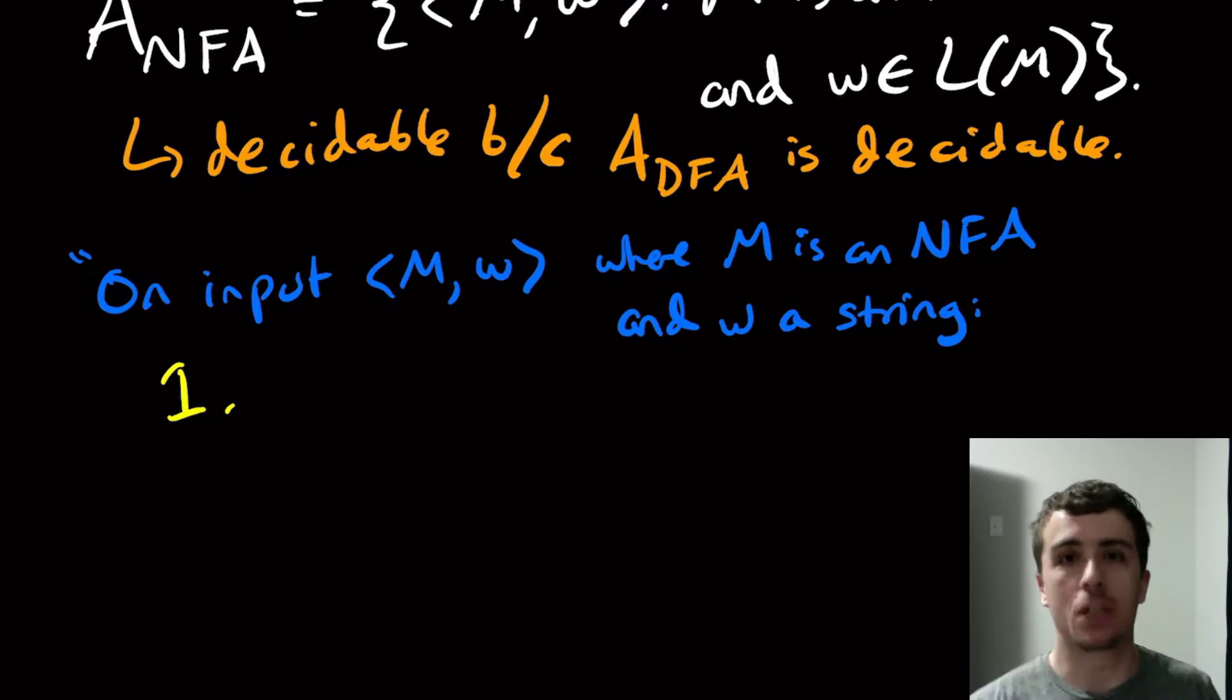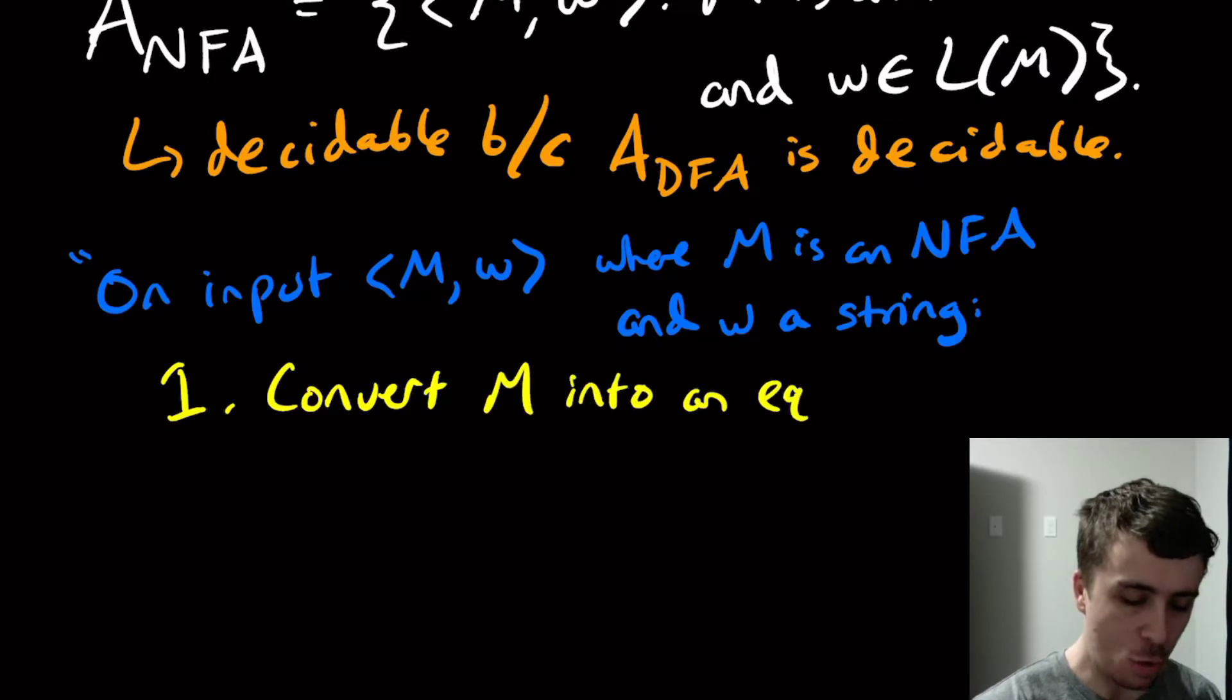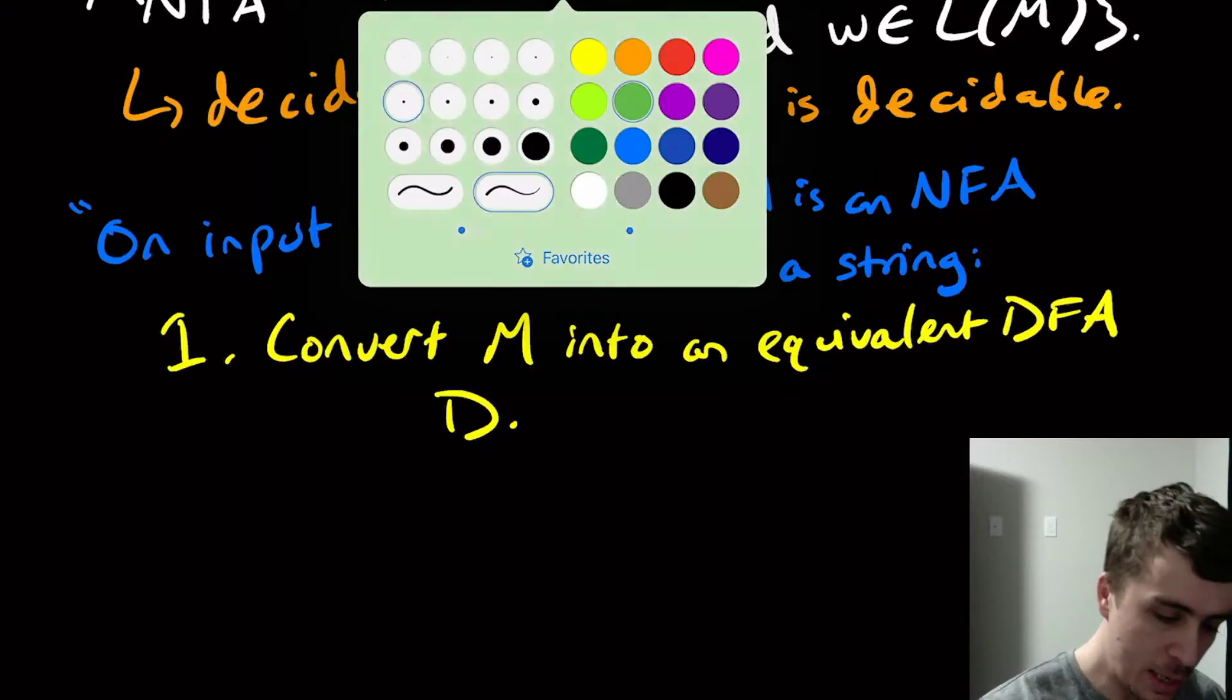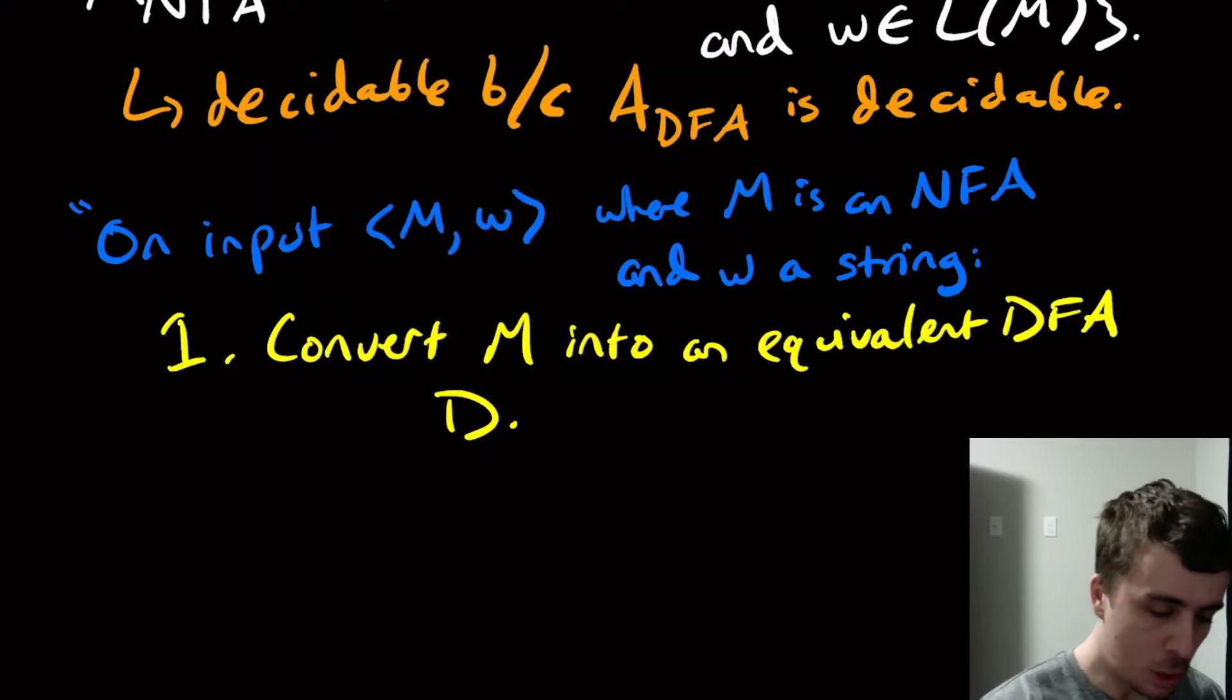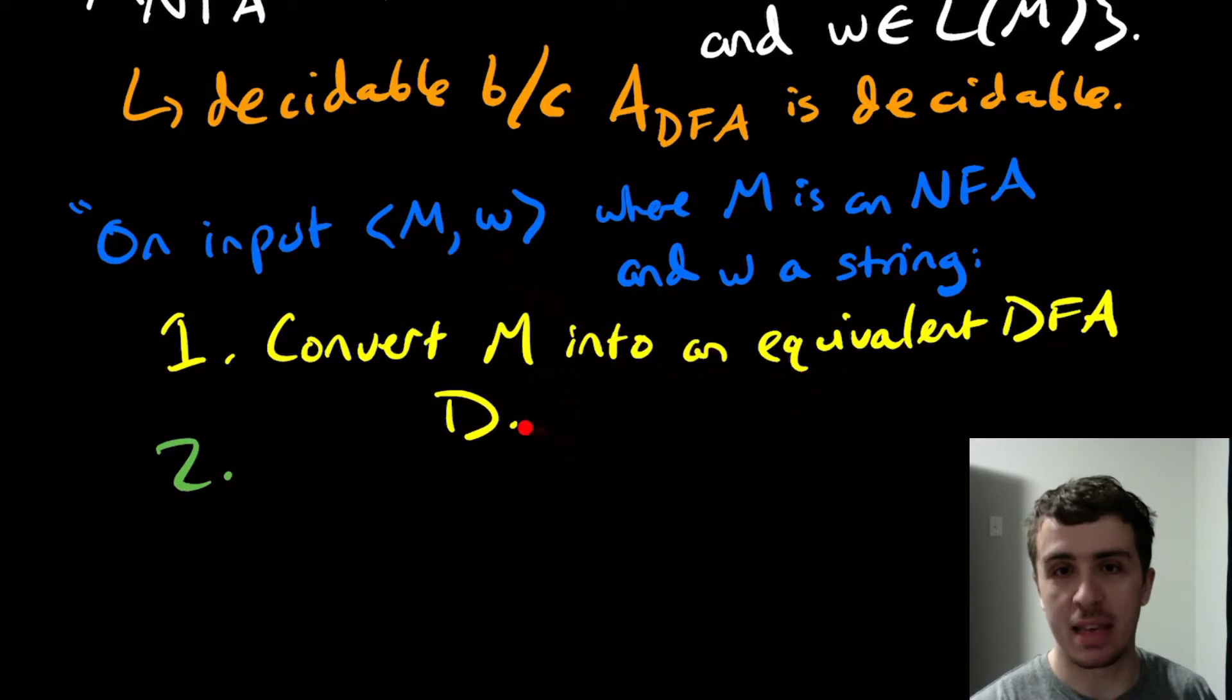Okay, so now what are we going to do here? Well, what we can do is we can just convert the NFA to a DFA. So convert M into an equivalent DFA. Let's call it D. And what I want to do here is we solve the A_DFA problem.